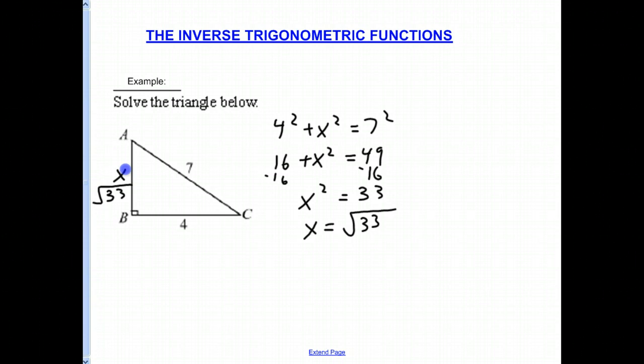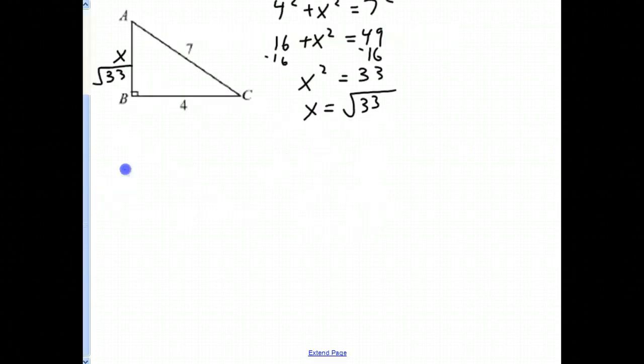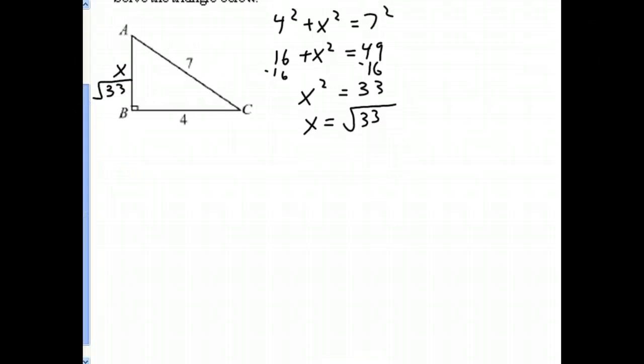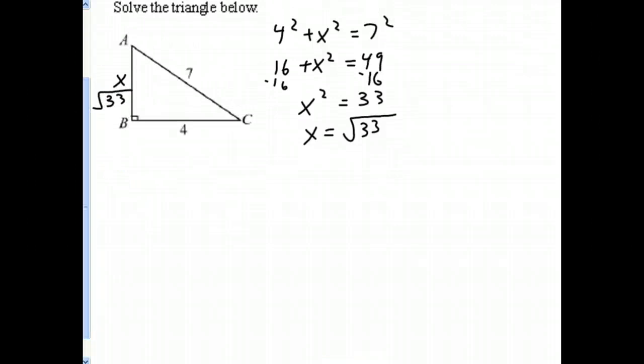But now the next part of solving the triangle is to find the measure of the angle. So let's say we wanted to find angle C. We have any of the trigonometric ratios that we could use. We could use the inverse sine, inverse cosine, inverse tangent. I don't like dealing with square roots myself. So I'm going to use the inverse cosine.